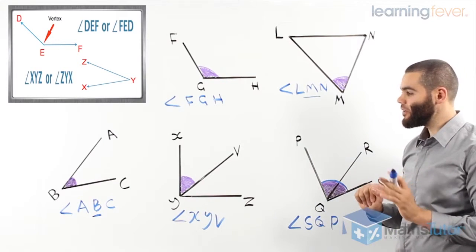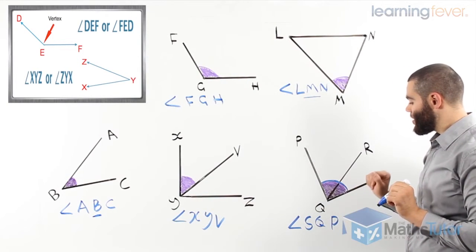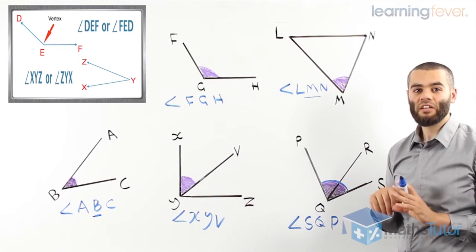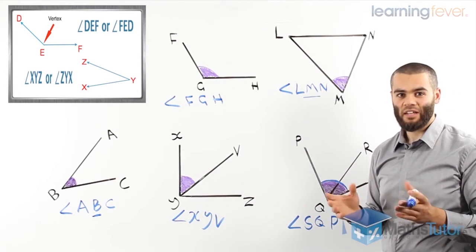So, as you can see, very straightforward. We only look for the vertex and we make sure the vertex is in the middle. This is how we name an angle.